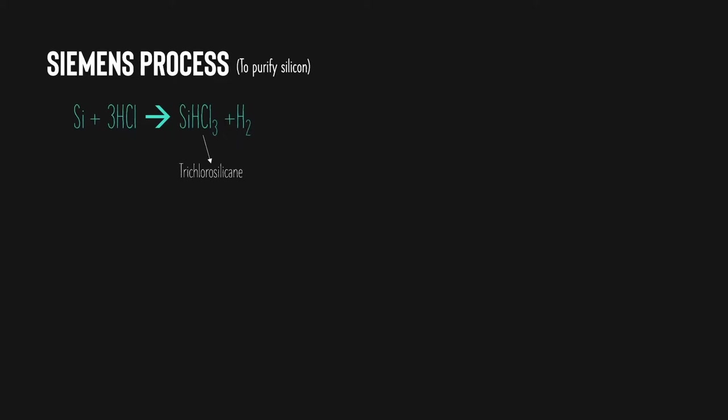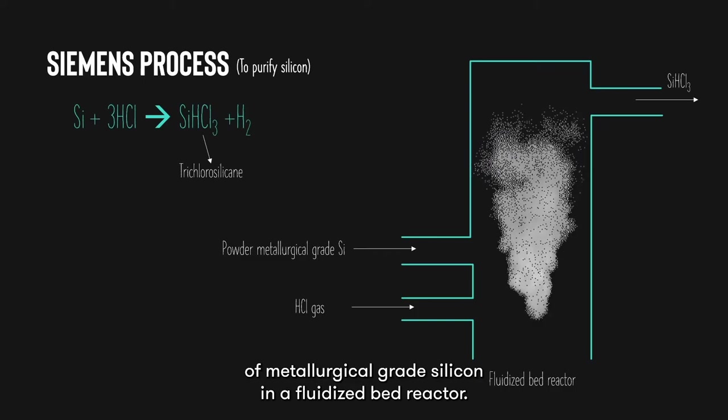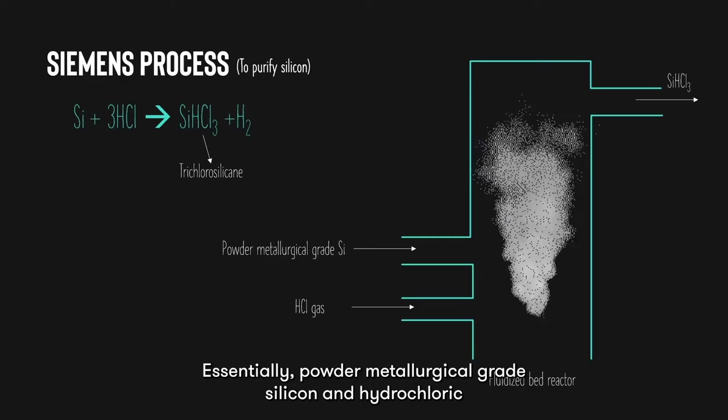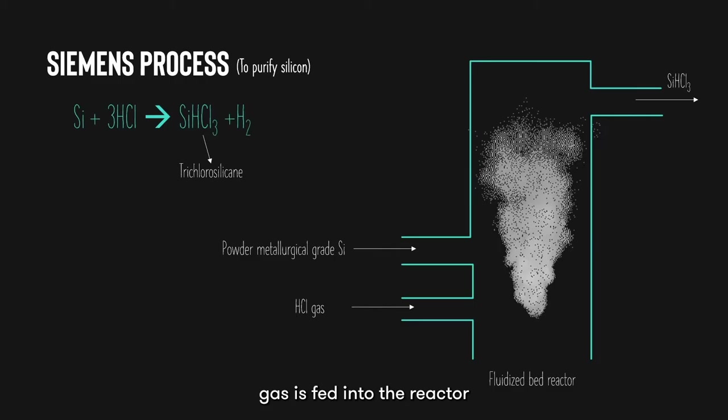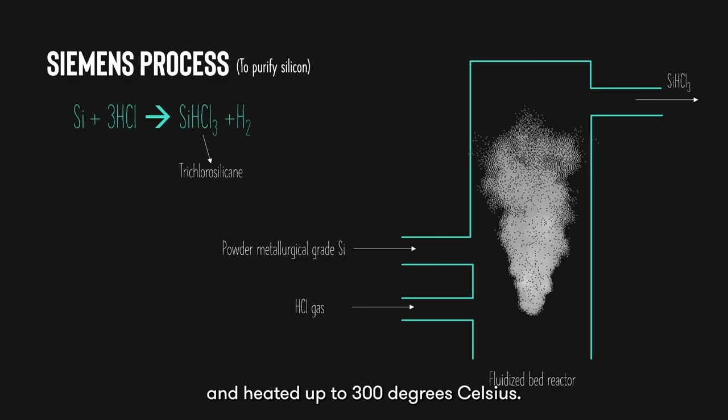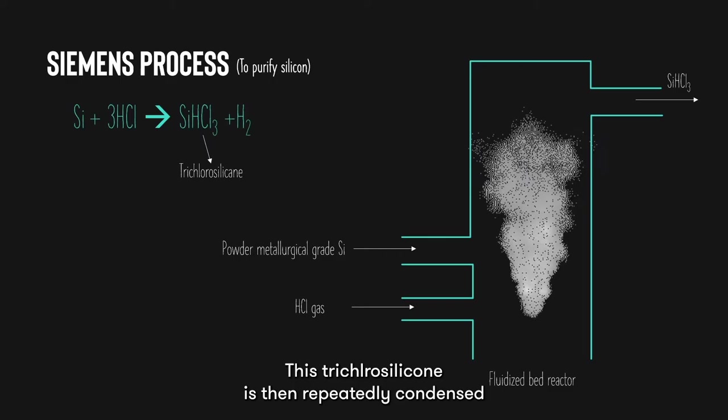The first step of the Siemens process is to obtain a gaseous form of silicon called trichlorosilane. This is done by hydrochlorination of metallurgical-grade silicon in a fluidized bed reactor. Essentially, powdered metallurgical-grade silicon and hydrochloric gas are fed into the reactor and heated up to 300 degrees Celsius, producing trichlorosilane.